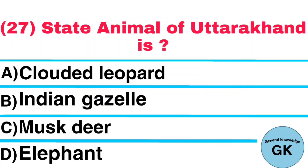Question Number 27. State Animal of Uttarakhand is: A. Clouded Leopard, B. Indian Gazelle, C. Musk Deer, D. Elephant. Answer: Musk Deer.